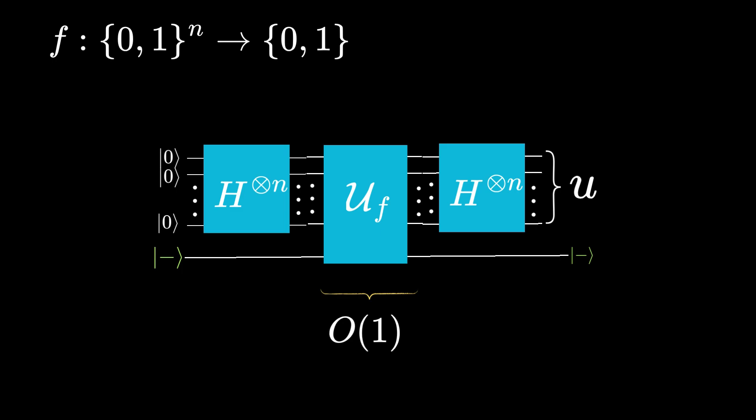The number of queries to f, or the quantum circuit representation of f, is O(1). Which means, with just one query from the circuit, we can recover u. This is fascinating, because for the classical circuit, we need at least n queries. But in the quantum circuit, just one query.